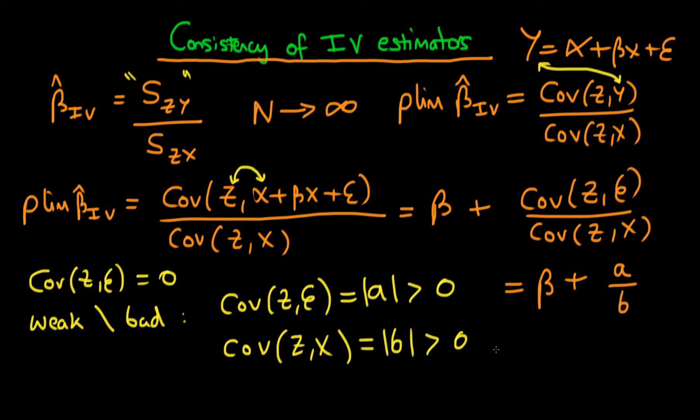B is sufficiently small when compared to how bad our instrument is, or A here in the expression, then we can actually have a probability limit for our IV estimator which is actually a long way away from the true parameter beta. So having a weak instrument